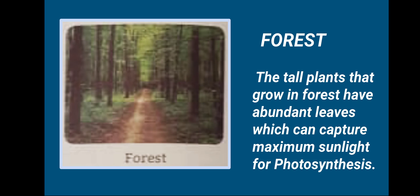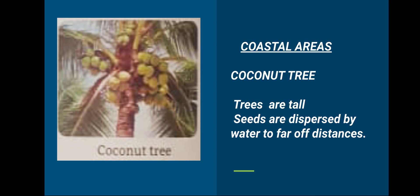Next is forest. In forests the plants are usually tall. There are many leaves which can capture maximum sunlight for photosynthesis. Now let us come to coastal areas, which are generally humid. Trees are generally tall, and an example is the coconut tree.